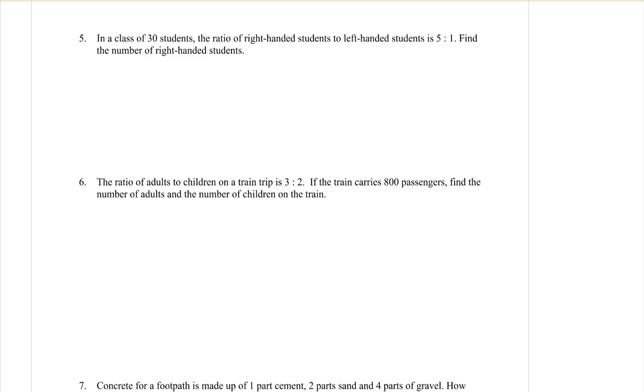Next page, question 5. In a class of 30 students, the ratio of right-handed students to left-handed students is 5 to 1. How many parts are in that ratio? I'm writing it down: 6 parts. Add those numbers together, 6 parts.